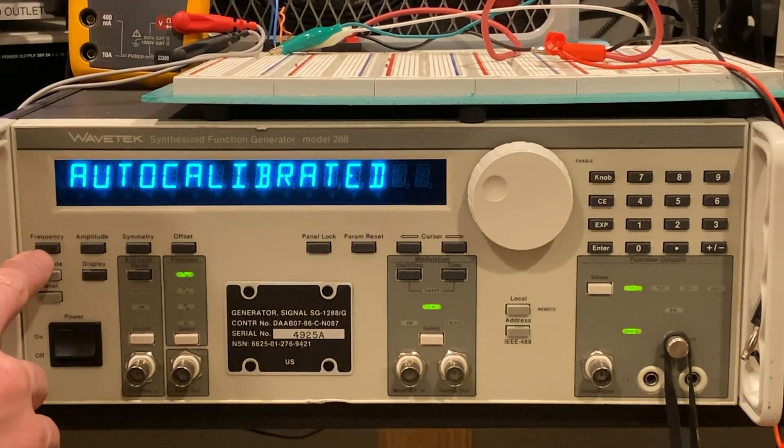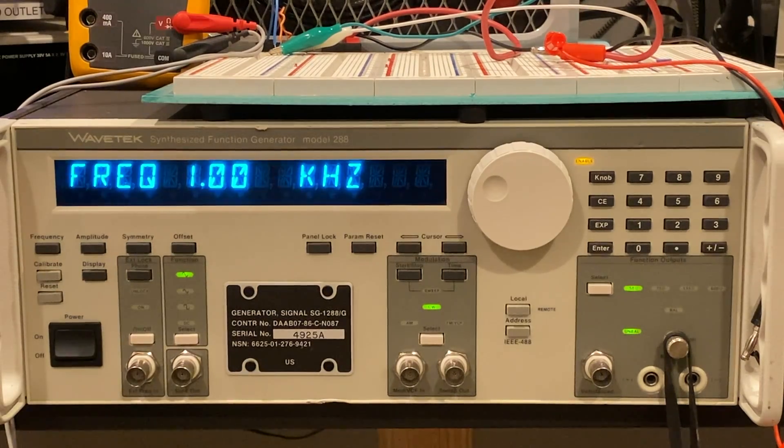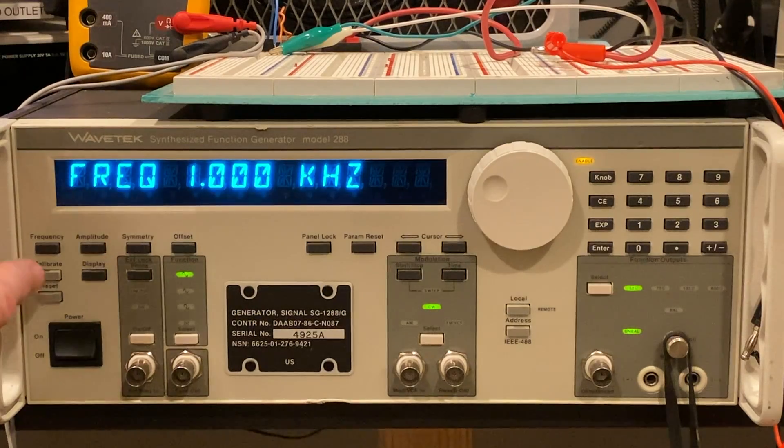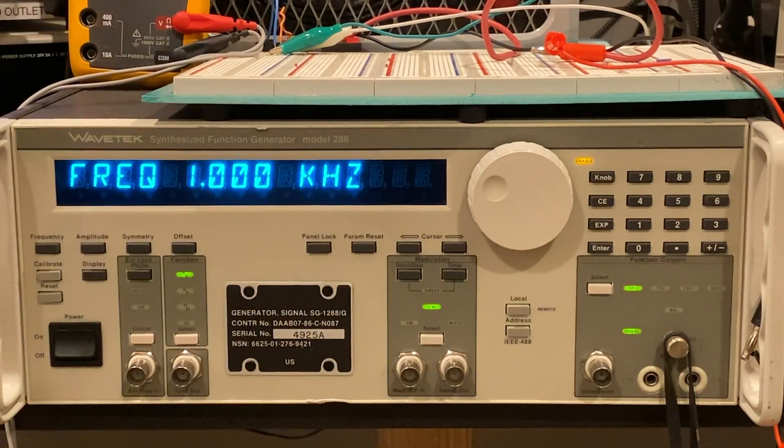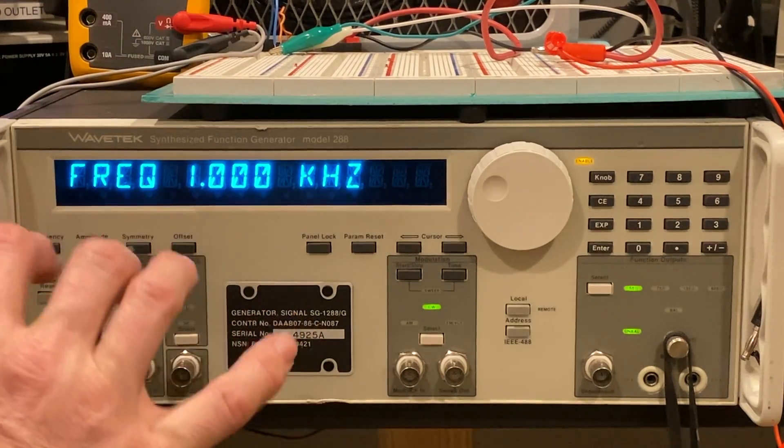Here we see the frequency button. If we press that we can see that the default is one kilohertz and that's from a RAM chip that we talked about in another video where the battery has to be replaced. That RAM chip stores a basic reset calibration and starting place for this particular unit. In this case the frequency they start with is one kilohertz, one millisecond per cycle.